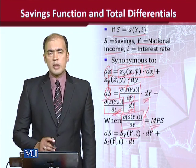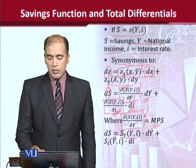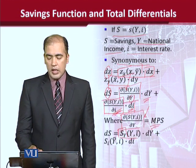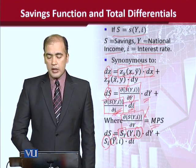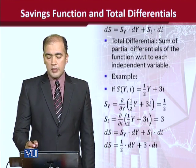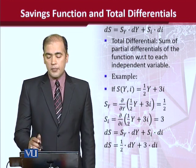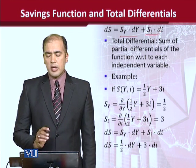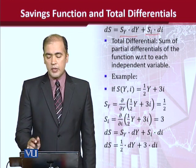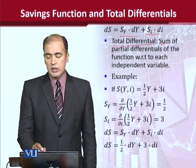Here we have written the more explicit way of writing the formula. We are going to look at the derivative with respect to interest rate I, while national income is kept constant. Total differential, as per the definition, is the sum of the partial differentials.